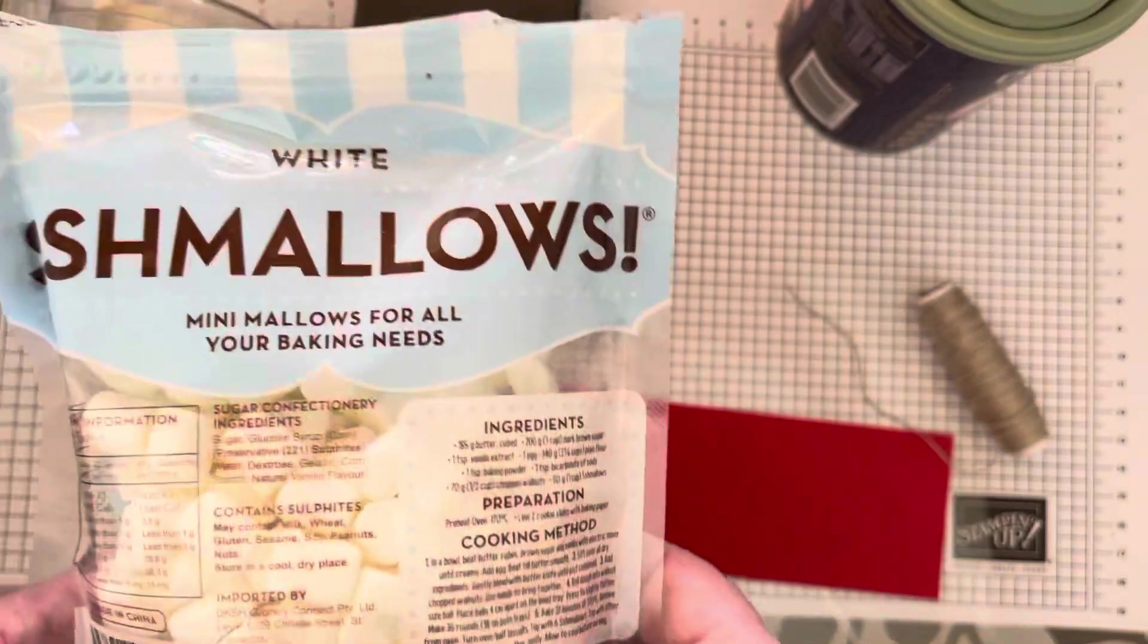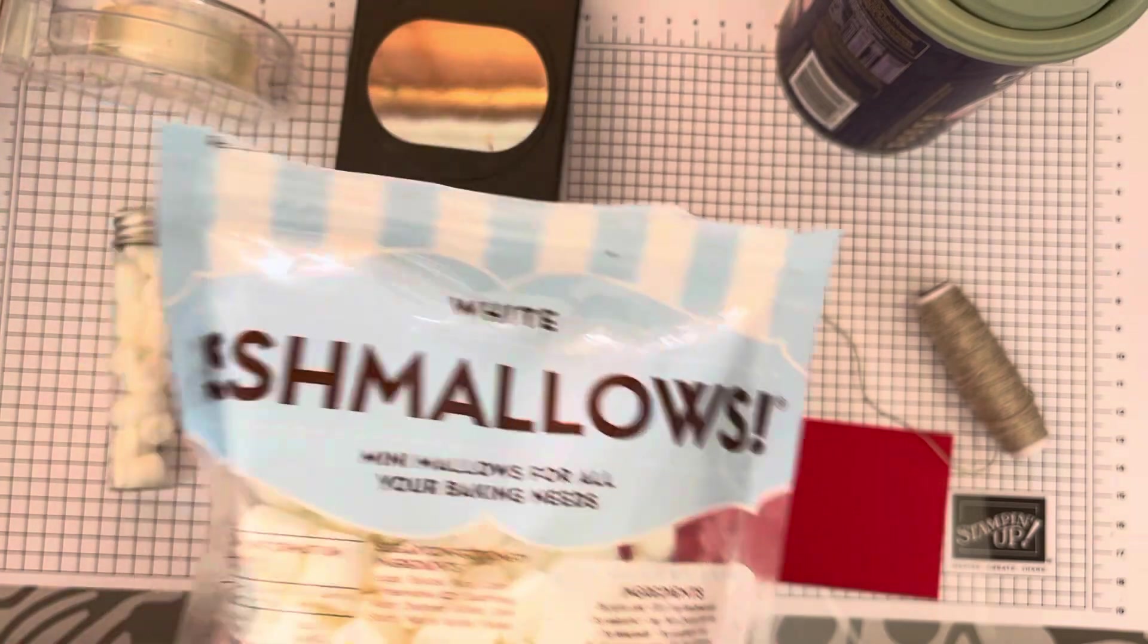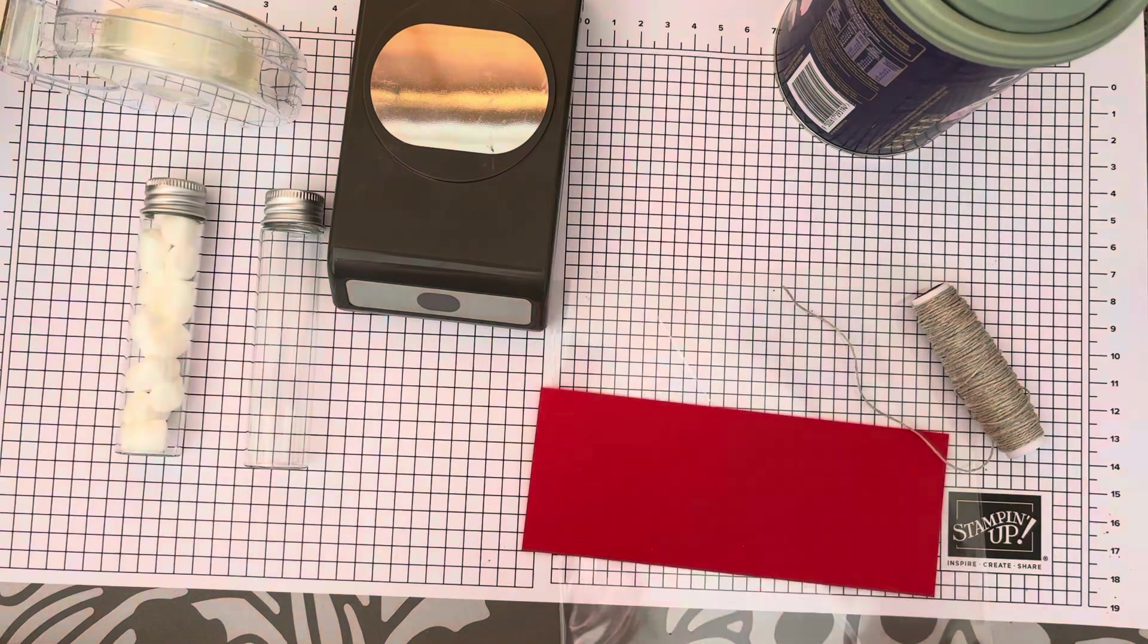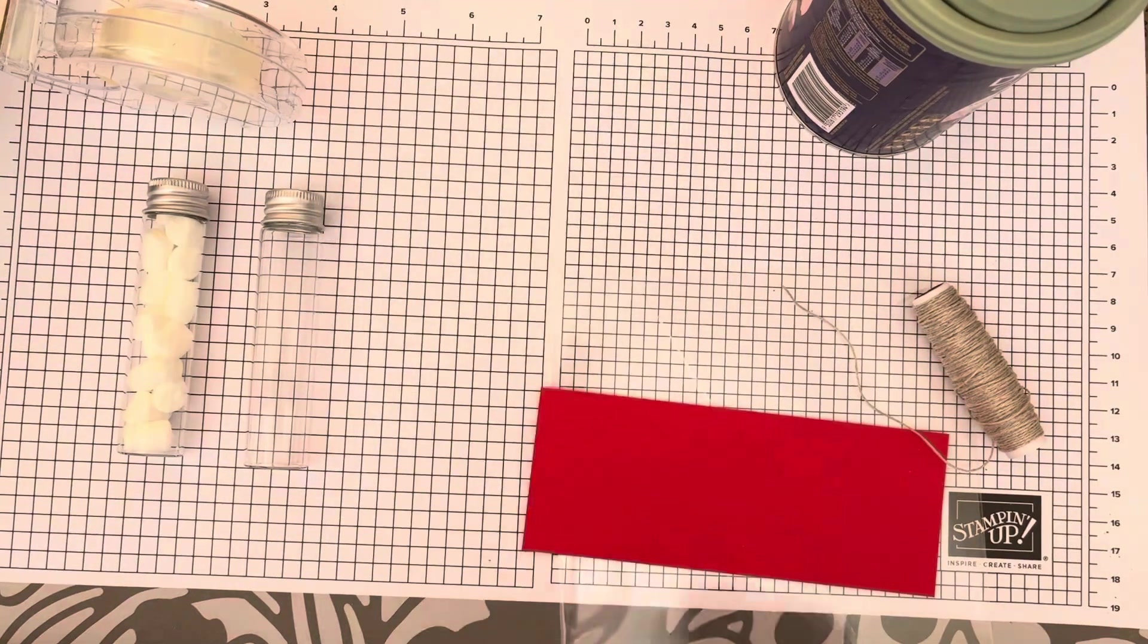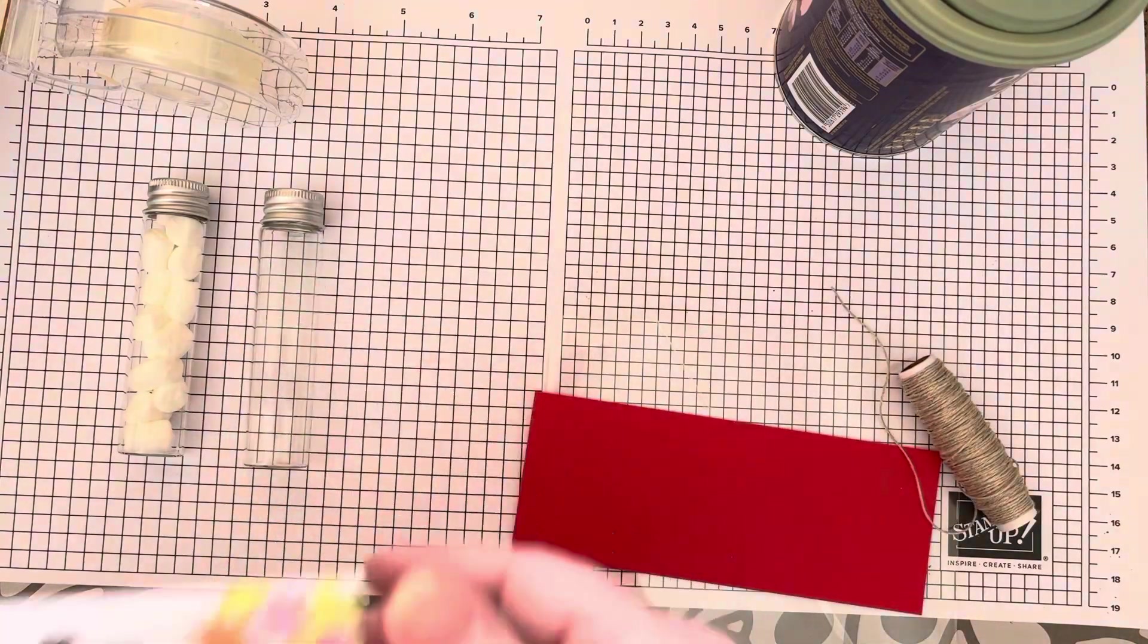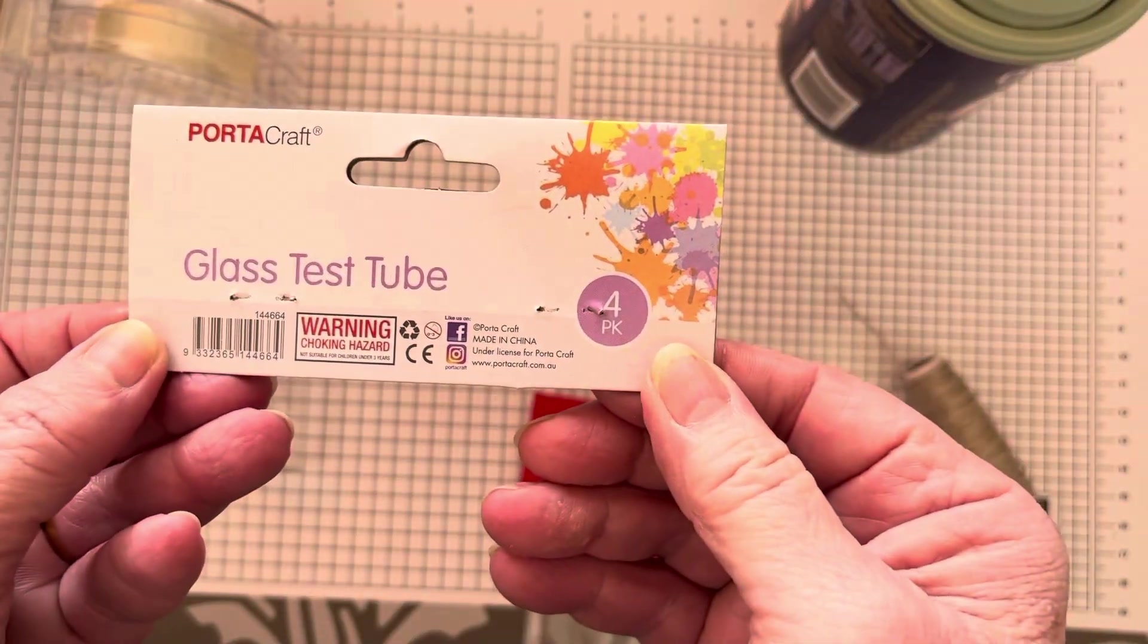I'm going to do hot chocolate, so I'm going to get some marshmallows. I've already put that in there so you didn't have to see. I'm going to do the chocolate, so let's start. Now I've got these tubes just from the junk store and they're called glass test tubes.